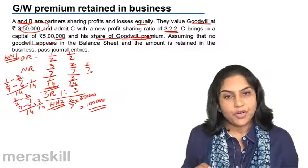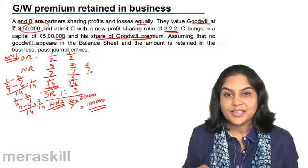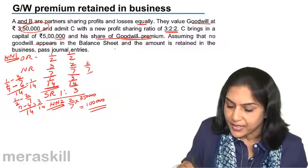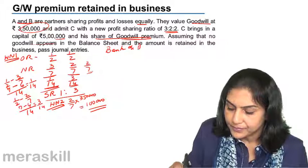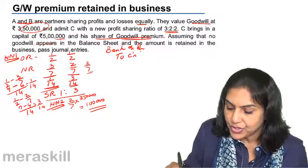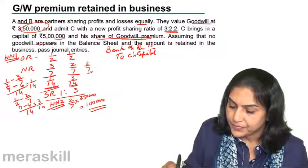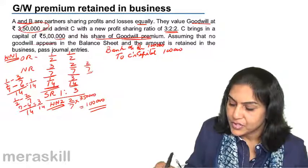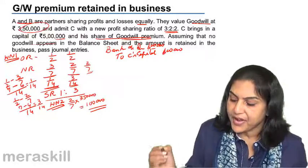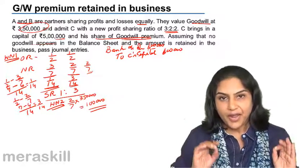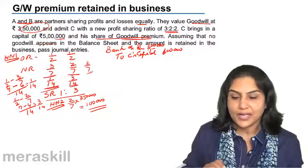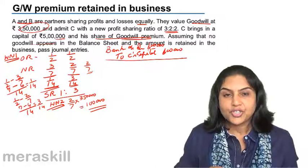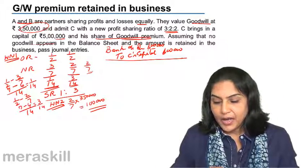C has brought in 5 lakh as capital and 1 lakh as goodwill premium, so C is bringing in a total of 6 lakh. The first journal entry: Bank account debit to C's capital account — 6 lakh. He brings in 5 lakh on account of capital and 1 lakh on account of goodwill premium.